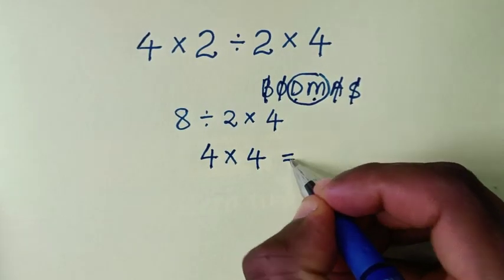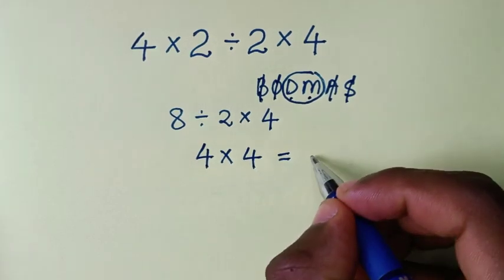Finally, we're left with 4 times 4, which equals 16.